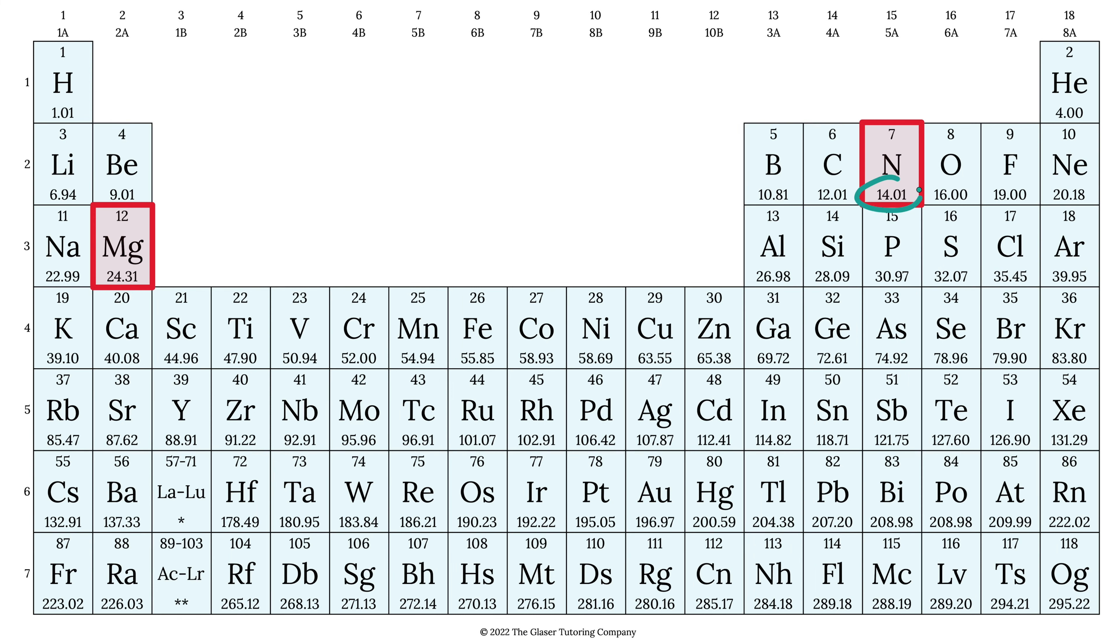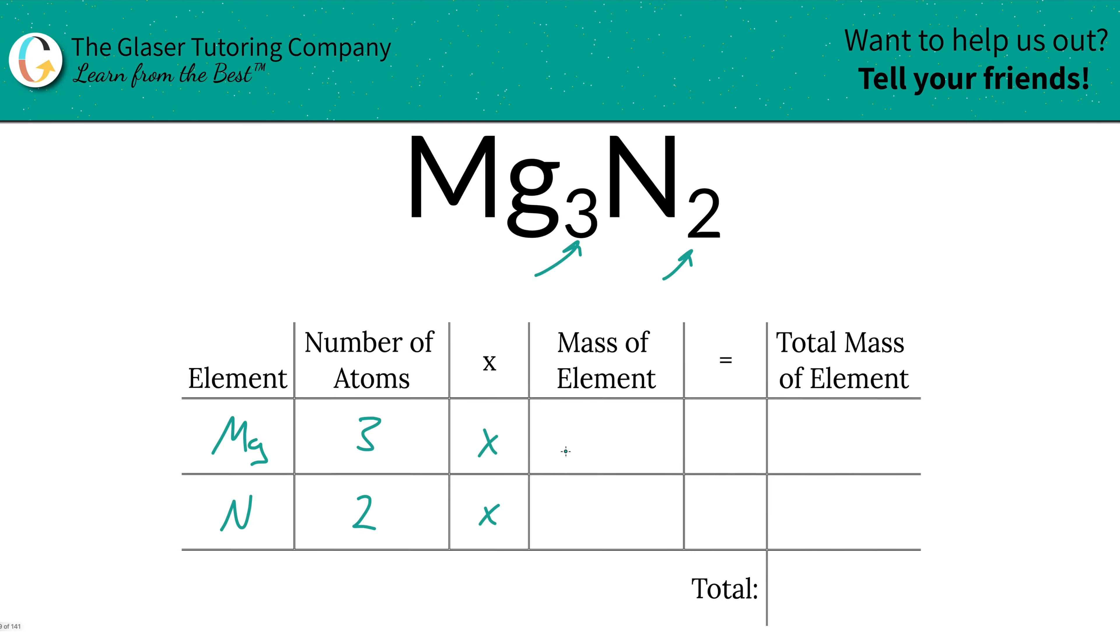So here's magnesium, 24.31. Nitrogen is 14.01. All right, so here we have 24.31 for magnesium and nitrogen was 14.01.